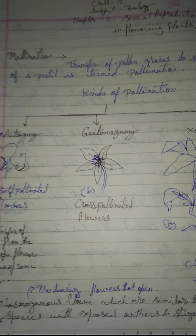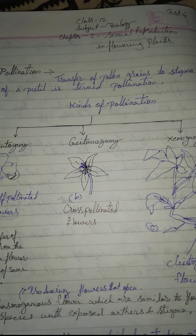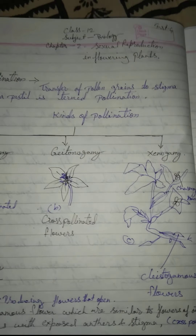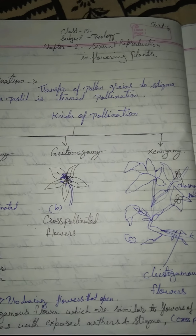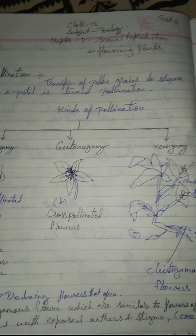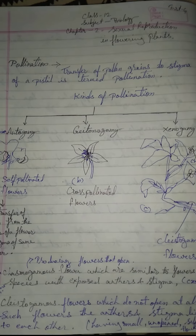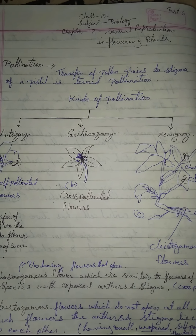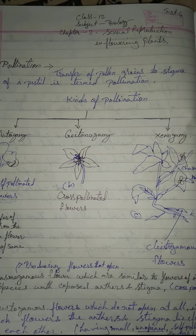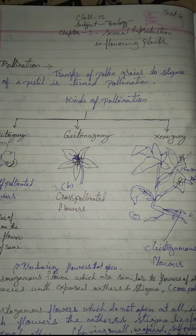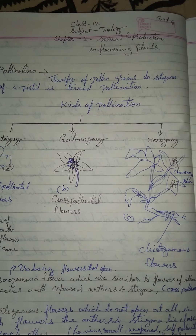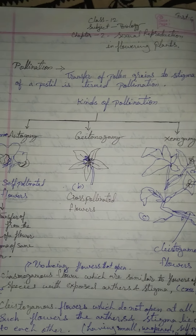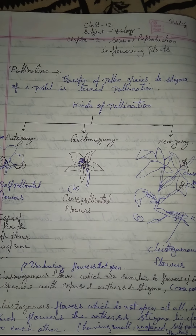Pollination is divided into three kinds: autogamy, geitonogamy, and xenogamy. The first type is autogamy — the transfer of pollen grain from the anther to the stigma of the same flower. In a normal flower which opens and exposes the anther and the stigma, complete autogamy is rather rare.